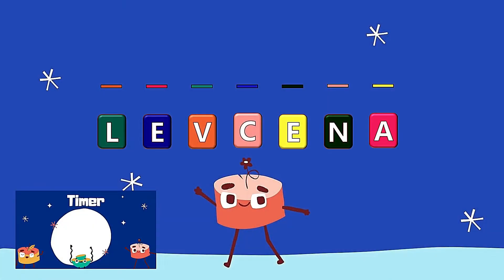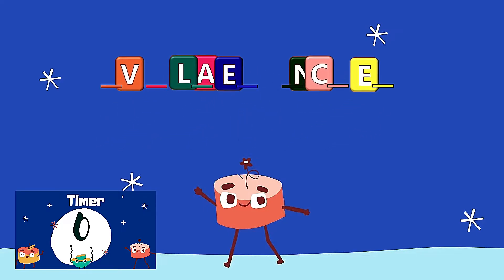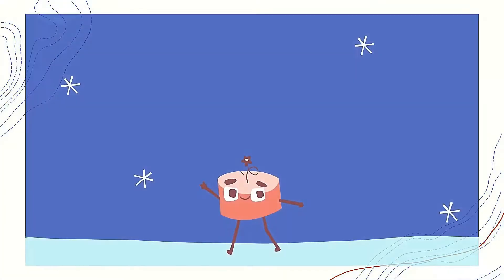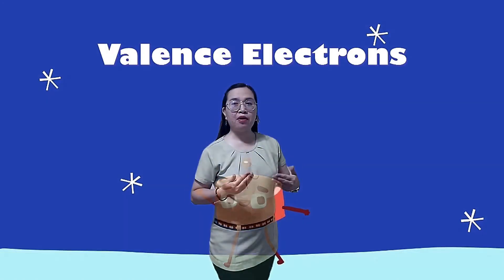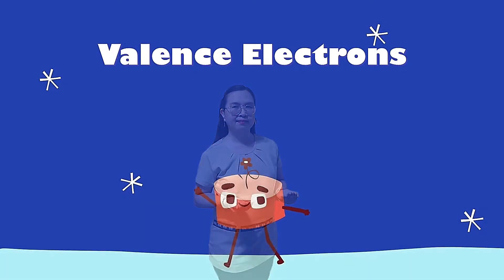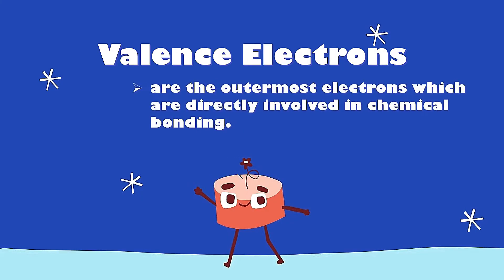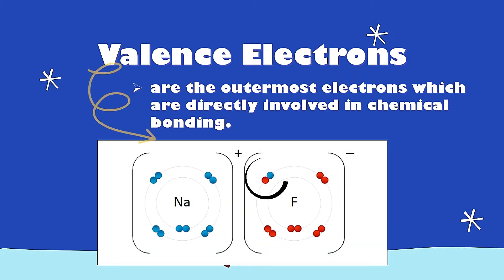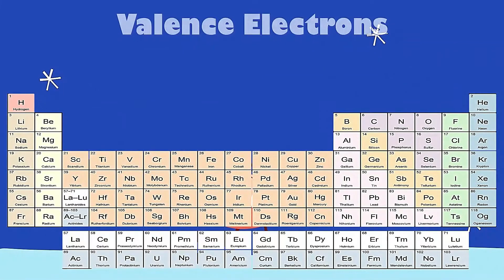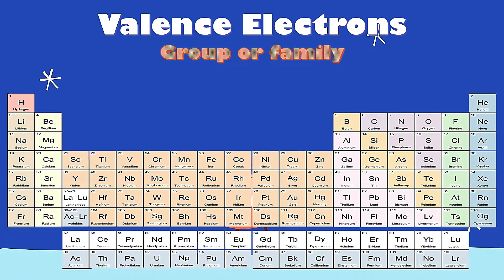Can you guess these jumbled letters? Very good! It's valence. Now, what is a valence electron? Valence electrons are the outermost electrons that are directly involved in chemical bonding. These electrons can be found in the outermost shell. In the periodic table, valence electrons are also known as group or family.